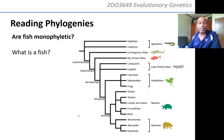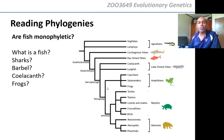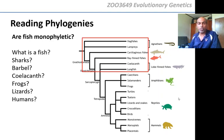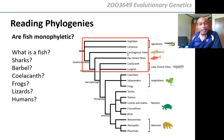How about fish — are fish monophyletic? First, what is a fish? A shark is a fish. A barbel is a fish. A coelacanth is a fish. Are frogs fish? No, frogs are amphibians. So here are all the fishes: from hagfish, lampreys, sharks, et cetera, to lungfish. Let's put a box around fish. Are they monophyletic? They cannot be monophyletic, because if they were, all these other groups would have to be included — the whole clade has to be monophyletic. But fish are not monophyletic, because that clade also includes all the other vertebrates: amphibians, reptiles, birds, and mammals. So fish are also paraphyletic.